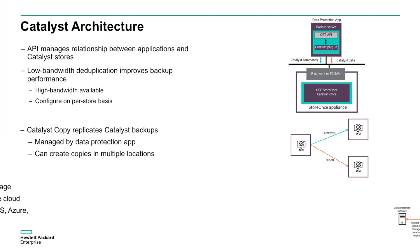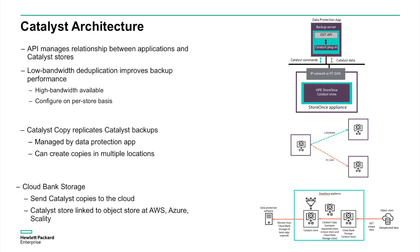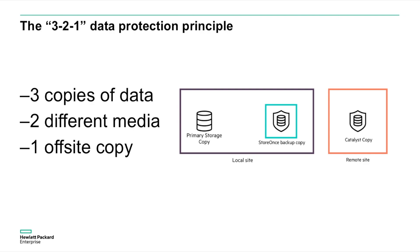CloudBank storage uses Catalyst copy technology to create backup copies in the cloud, using object stores created at Amazon Web Services, Microsoft Azure, or in a scalable private cloud. All of these features fit perfectly with the industry standard 3-2-1 data protection principle that HPE highly endorses. 3-2-1 means three copies of your data on at least two different types of storage with at least one copy off-site. Catalyst makes meeting this 3-2-1 principle fast, simple, and can make an enormous difference in a customer's data protection strategy.